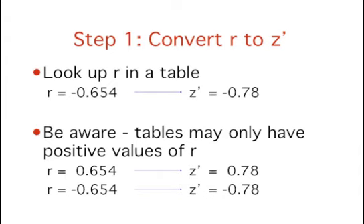One thing to be aware of when using these tables is that often they only have positive values of R. Fortunately, this is not a big problem since the only thing that changes is the sign. So, for example, the value of Z' associated with an R of 0.654 is 0.78. Therefore, the Z' associated with an R of negative 0.654 is negative 0.78.